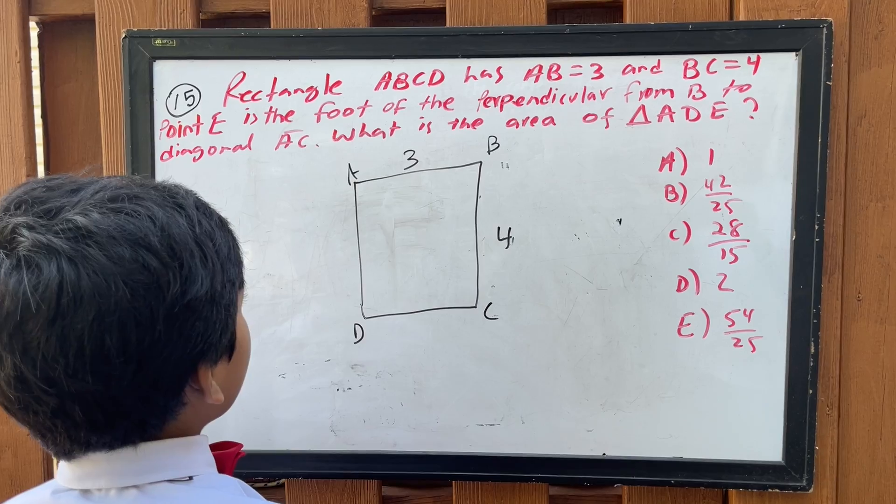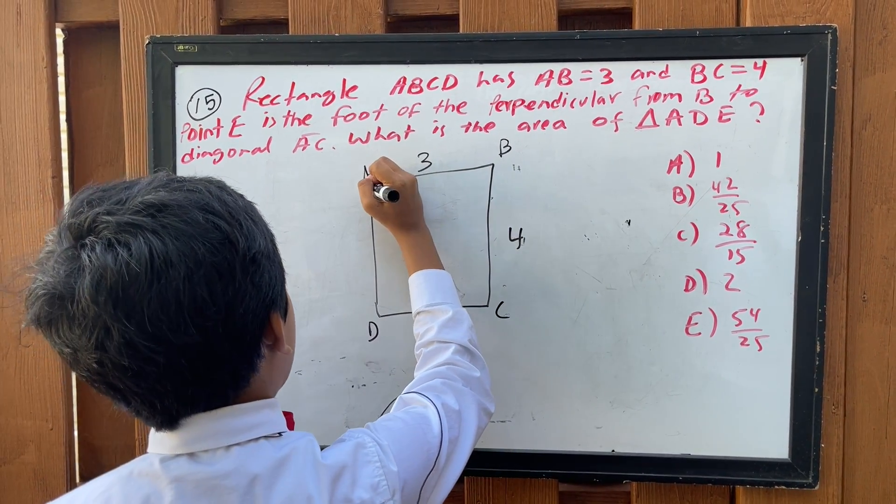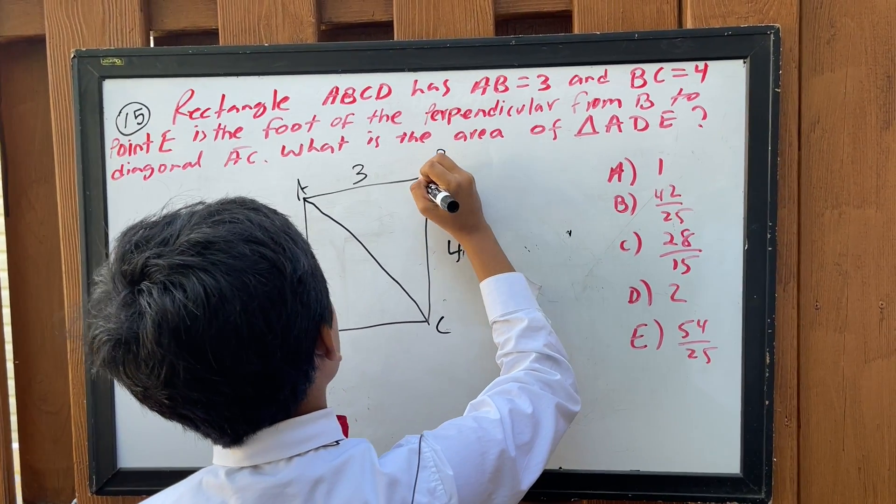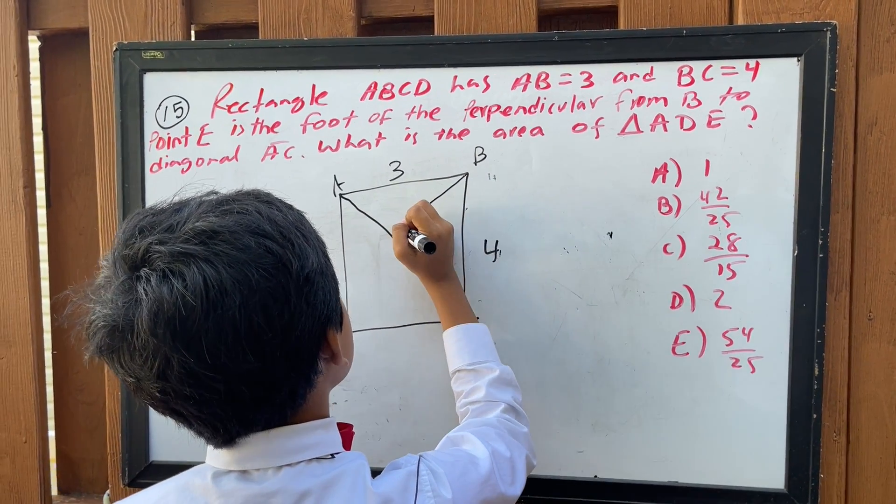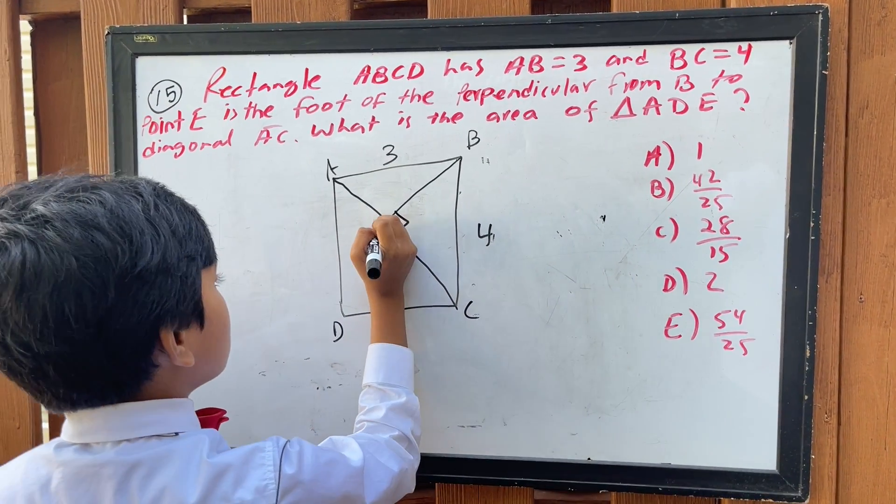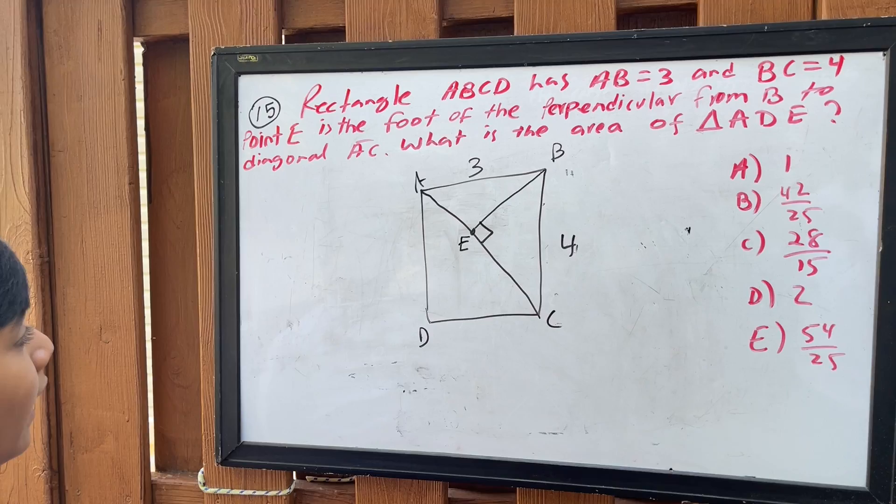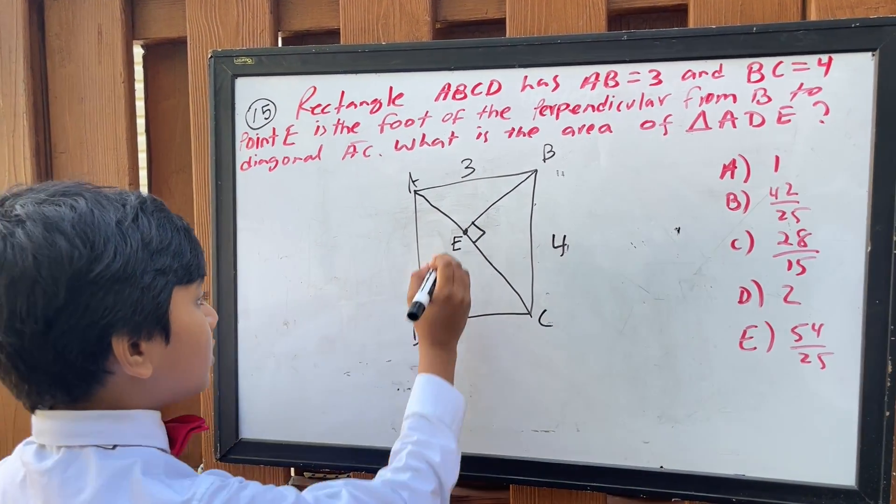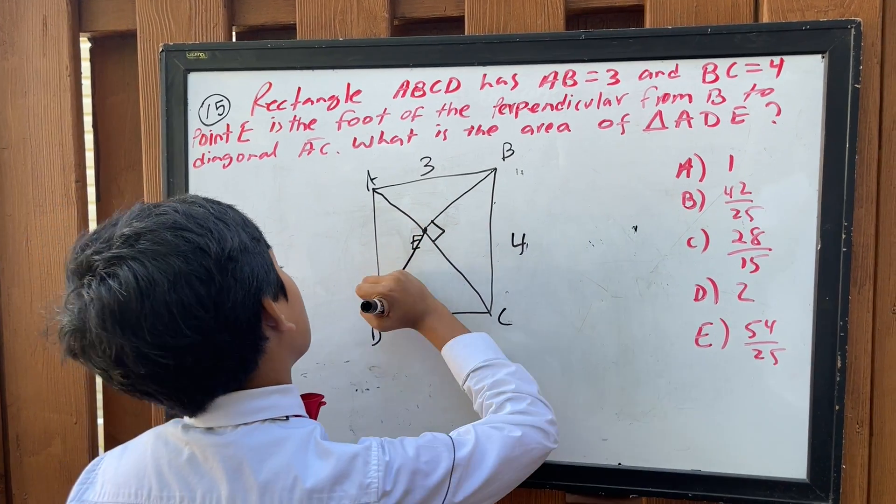Point E is the foot of the perpendicular from B to diagonal AC. So let's draw AC. Let's draw the perpendicular from B to AC, which is not the center. And here's E. So what is the area of ADE? Which will be this triangle over here.